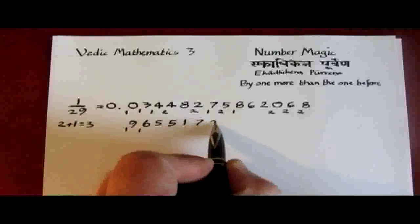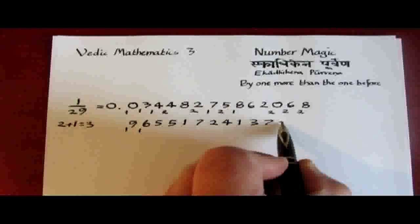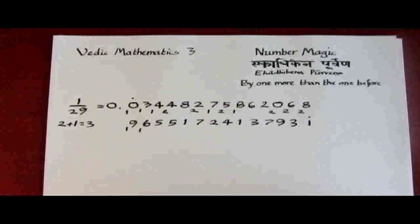5, 5, 1, 7, 2, 4, 1, 3, 7, 9, 3, 1, recurring. And that's the decimal equivalent through very easy, simple steps and consisting of 28 digits.